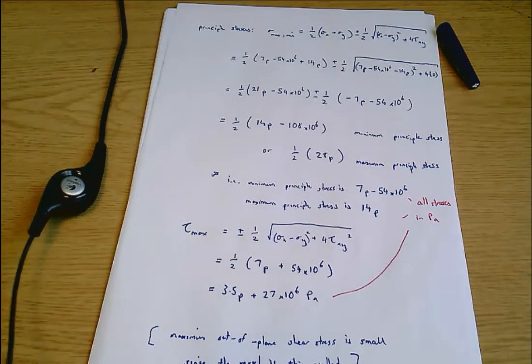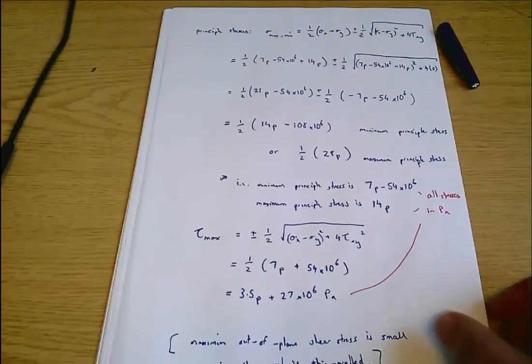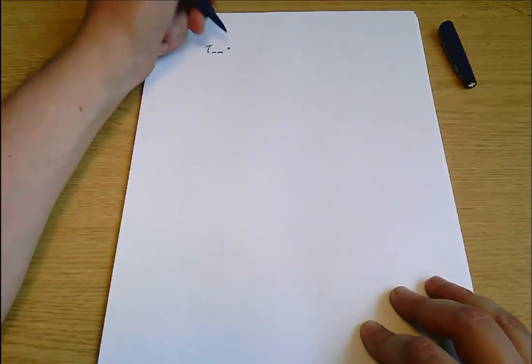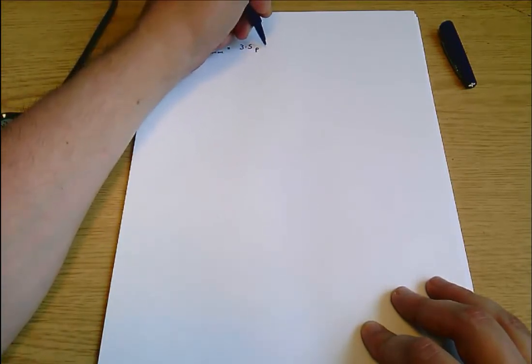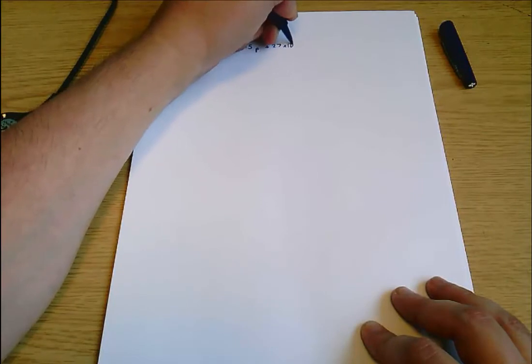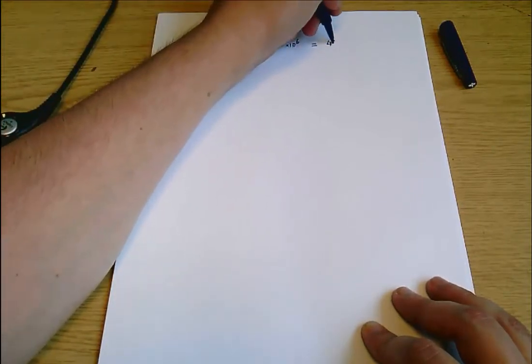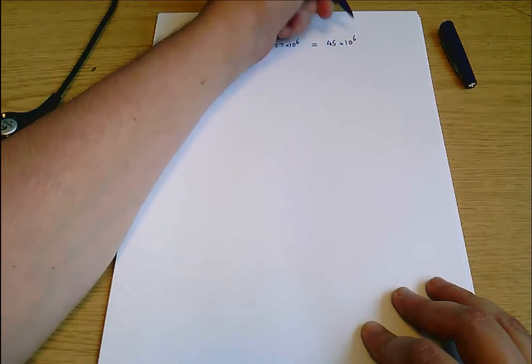Then the question says determine the maximum allowable internal pressure if the allowable shear stress is limited to 45 megapascals. Well, we know that the maximum shear stress tau max equals 3.5P plus 27 times 10 to the 6, and that's limited to be 45 megapascals from the question.